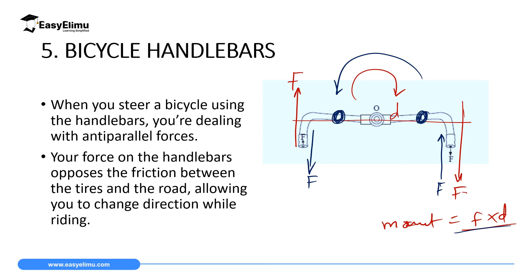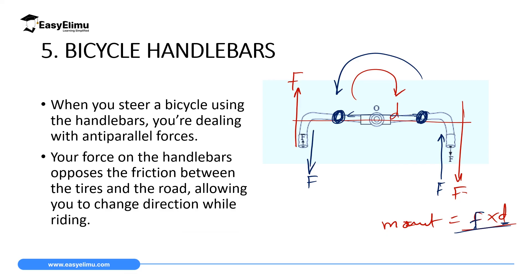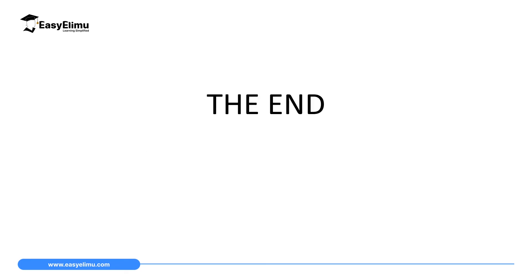An important note: if you hold the bike closer to the center, the distance between where you apply the forces becomes smaller. Since moment equals force times distance, a smaller distance means you need a larger force to change direction, making your work harder. Conversely, a bike with handlebars far apart gives a large distance, so you need only a small force to turn — making it much easier to change direction.